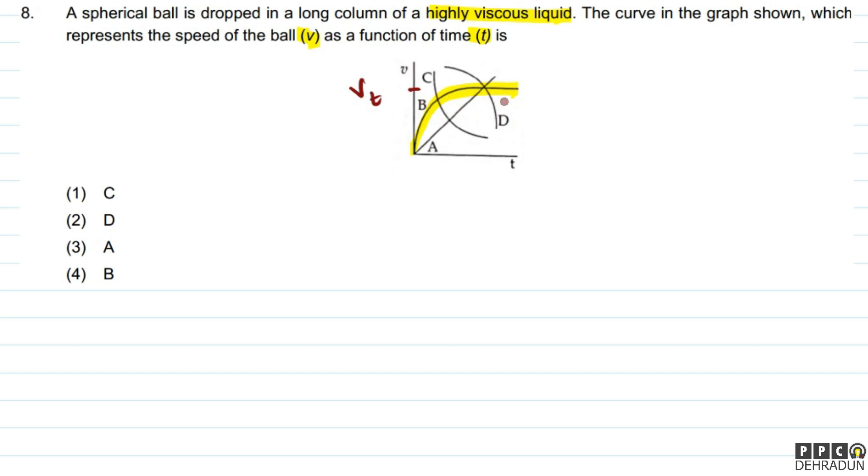Terminal velocity is when velocity doesn't increase. This is the instant when the force of gravity, viscous force, and buoyant force result in zero net force, zero acceleration, and fixed speed which is the terminal velocity. The answer is option number 4, that is option B.